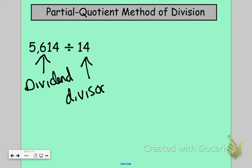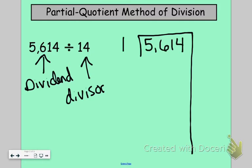So what we're going to do is we're going to draw kind of like a large 7, is what I like to call it. We're going to put the dividend inside of that 7, so 5,614 and the divisor of 14 on the outside. This is really similar to how you would set it up if you were using the traditional algorithm.